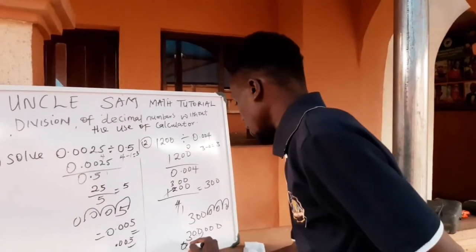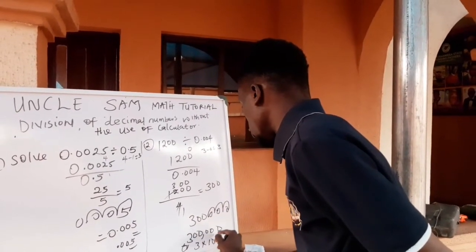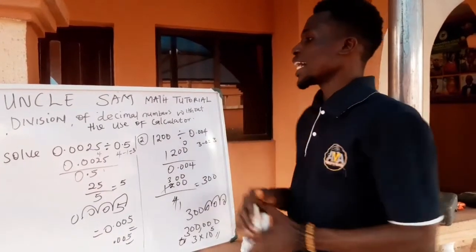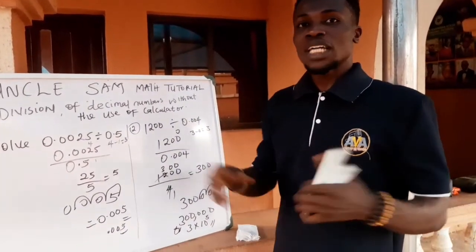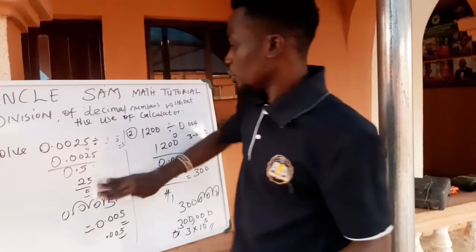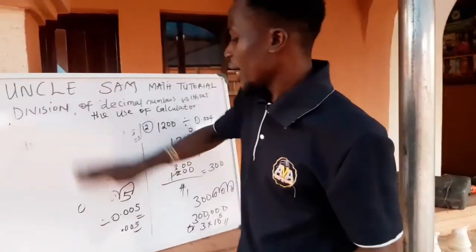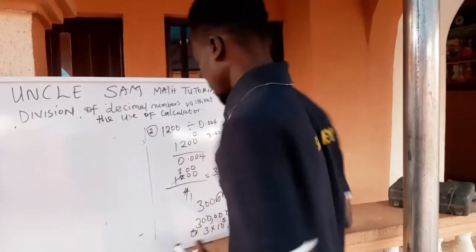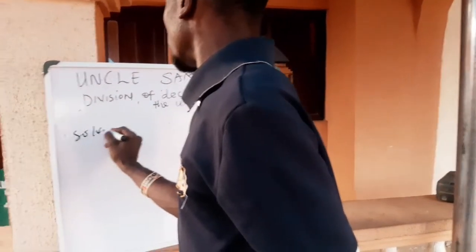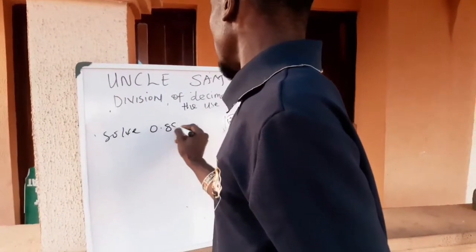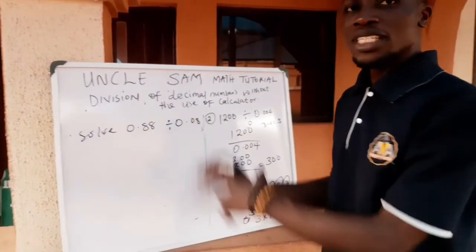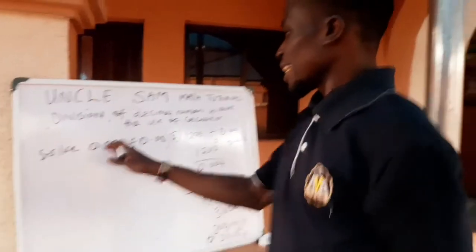Or you can say it is 3 times 10 raised to the power 5. This is how you can divide decimal numbers without the use of a calculator. One more example, because there are cases where you have a number like this. Solve 0.88 divided by 0.08.